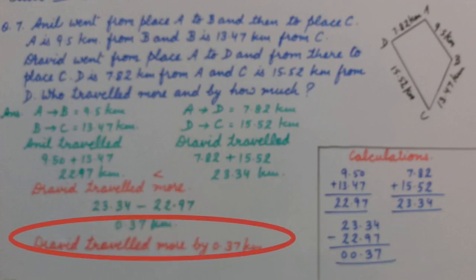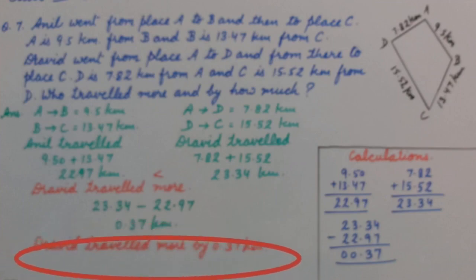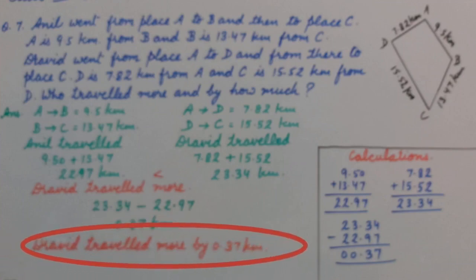So our final answer is Drawer travelled more by 0.37 km.